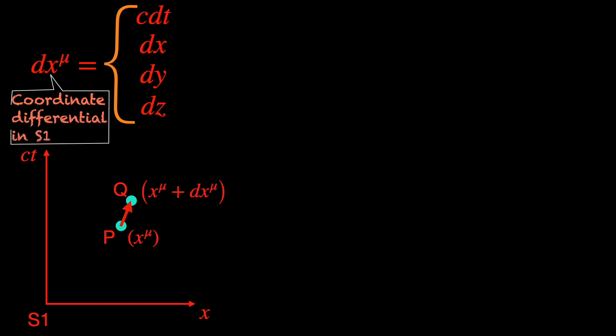Now, take a second event Q infinitesimally close to P, that is very close to P. Being so close to P, the space-time coordinates of Q will differ only slightly. So, those will be X mu plus DX mu. The small difference DX mu between their space-time coordinates are CDT along our time direction and DX DY and DZ along our three spatial directions. DX mu is referred to as the space-time coordinate differential that we observers in S1 frame measure.